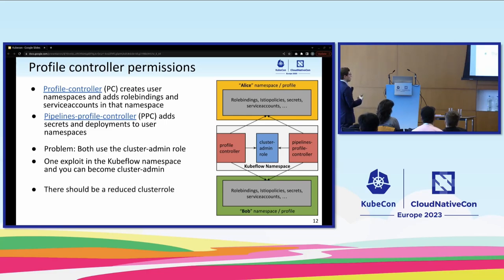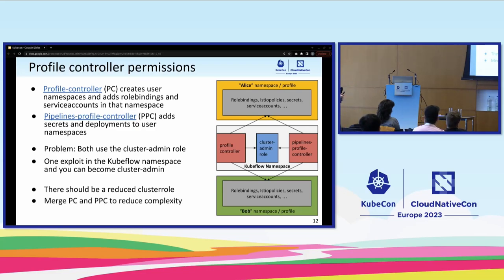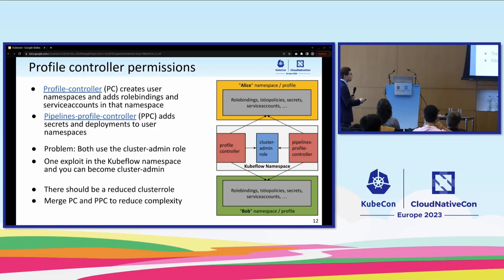What can we do? It should, of course, be a reduced cluster role. And if possible, we should talk to the Google developers to merge all of this into one profile controller to reduce complexity and therefore attack surface. This is a fairly simple example — rather on the lower end impact-wise, but it sets the stage for more sophisticated issues.